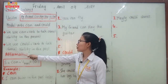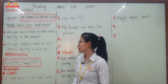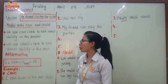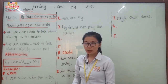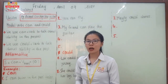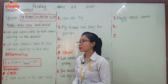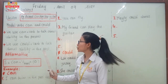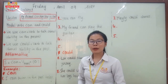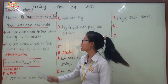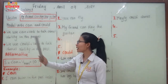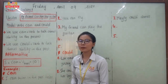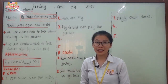We use 'could' plus a verb to talk about ability in the past. Both can and could are used to talk about ability — the same concept — but one is in the present and the other is in the past. If you want to talk about present ability, use 'can plus verb'; for past ability, use 'could plus verb'.